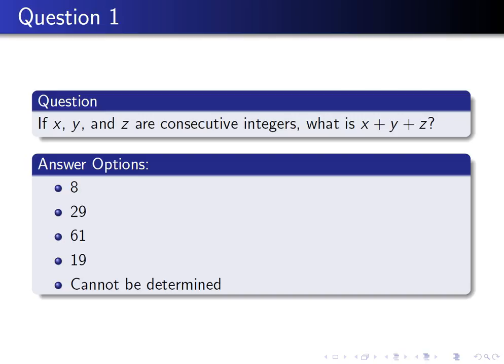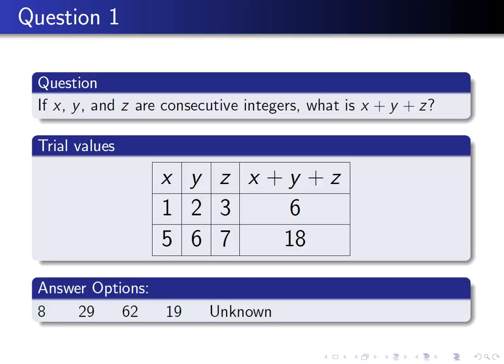So if we try some trial values, simplest X, Y, and Z that are consecutive counting numbers would be 1, 2, 3. X plus Y plus Z is 6.